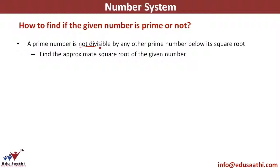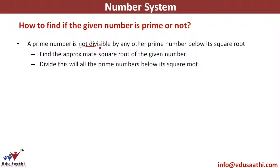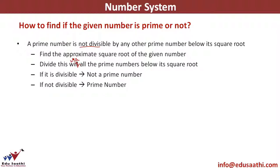So what we do is find the approximate square root of the given number and divide it with all the prime numbers below that square root. If the given number is divisible by any prime number below its square root, it is not a prime number. If it is not divisible by any prime number below its square root, the given number is a prime number.